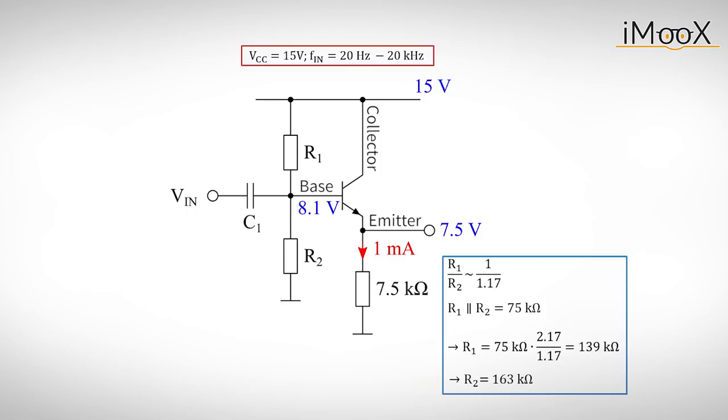Those exact resistor values are not commercially available, so we take comparable values which can be found in the E24 standard resistor series. This gives us 130 k for R1 and 150 k for R2.